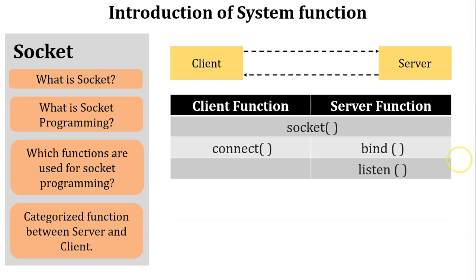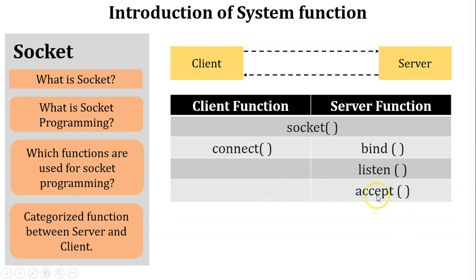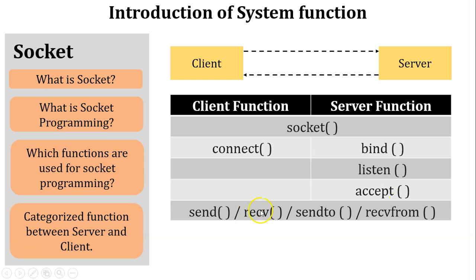The listen function is used by the server so that it can listen for incoming connections from the client. The accept function is used by the server; whenever it is executed, the client becomes connected with the server. Send and receive are used by both client and server to exchange information or data. The close function is used by both client and server to terminate the socket.